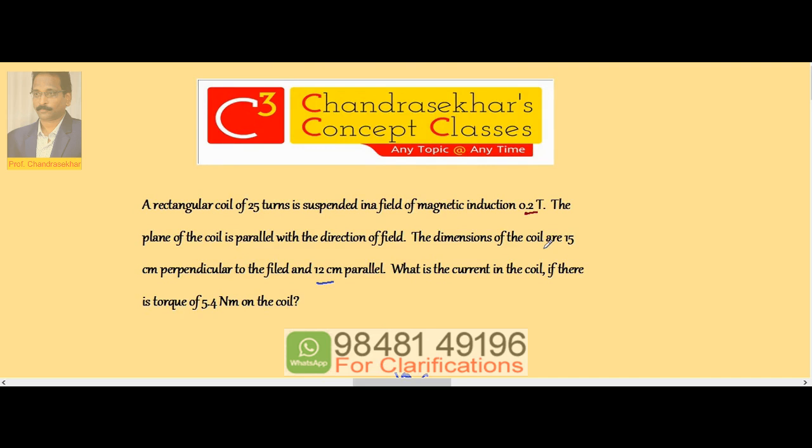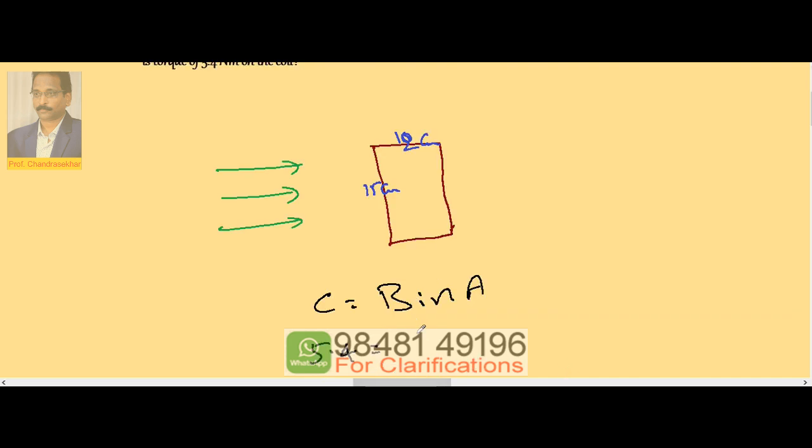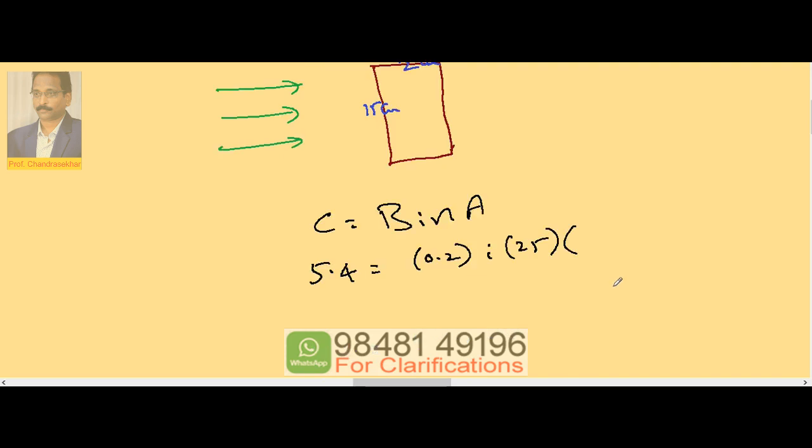B value is given as 0.2 tesla. I is unknown. Number of turns is 25 and the area is 15 into 12.